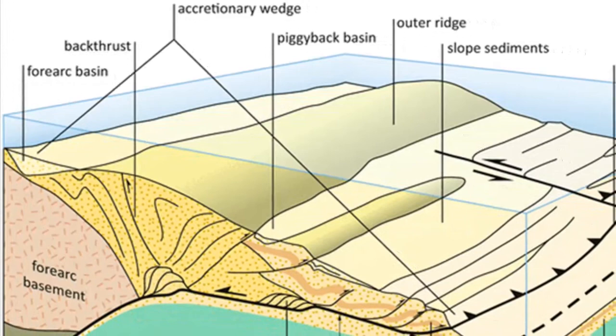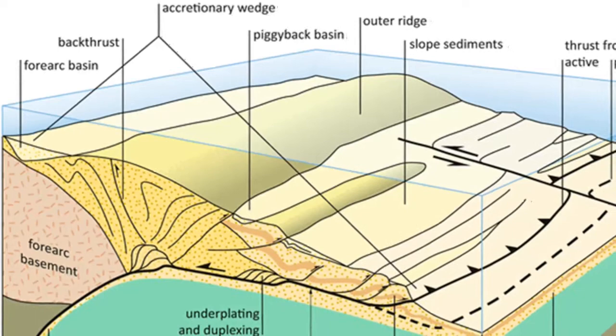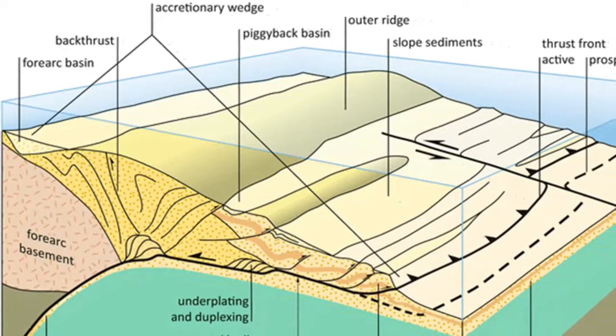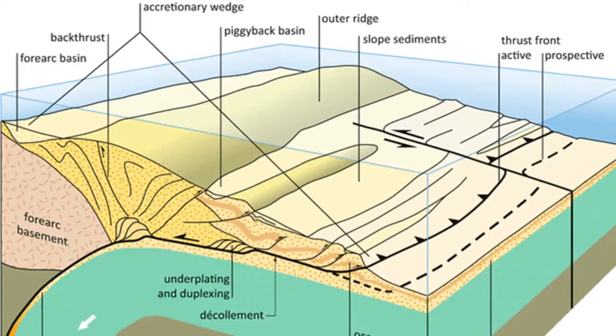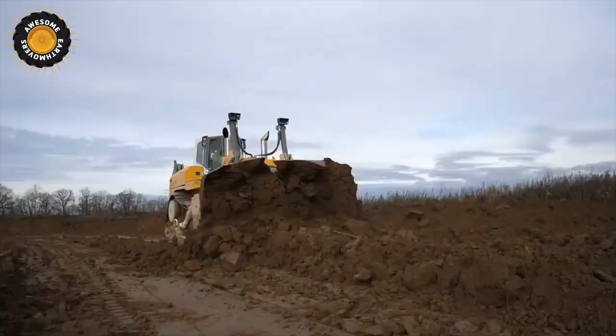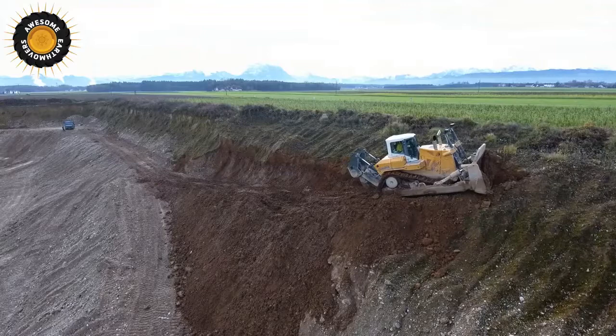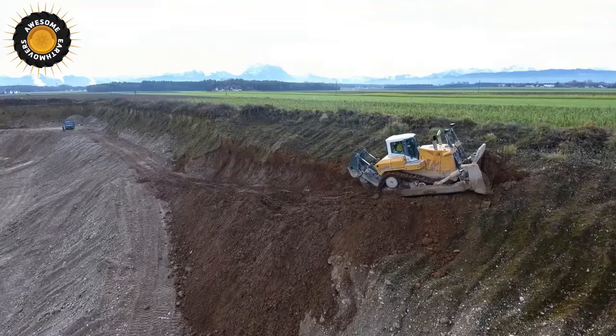How does an accretionary wedge develop? During the development of volcanic arcs, sediments that are carried on the subducting plate, as well as fragments of oceanic crust, may be scraped off and plastered against the edge of the overriding plate. The resulting chaotic accumulation of deformed and thrust-faulted sediments and scraps of ocean crust is called an accretionary wedge. The processes that deform these sediments have been likened to what happens to a wedge of soil as it is scraped and pushed in front of an advancing bulldozer. Some of the sediments that comprise an accretionary wedge are muds that accumulated on the ocean floor and were subsequently carried to the subduction zone by plate motion.